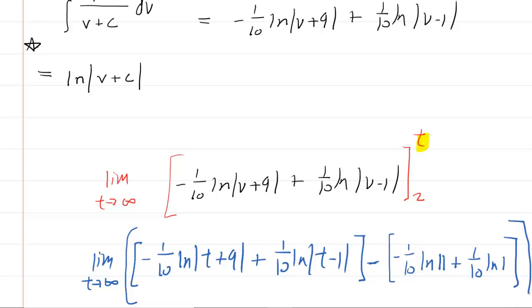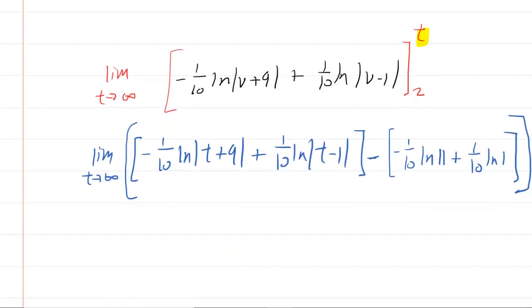Okay, so far, so good. Now, we just have to clean this up a little bit. Notice the ln of 1 is just zero. So this term over here is going to drop out of the equation. And then what I think we need to do here is factor out a negative 1/10.